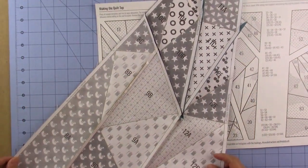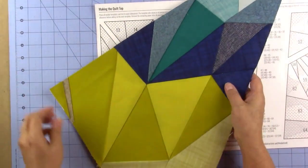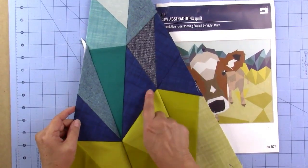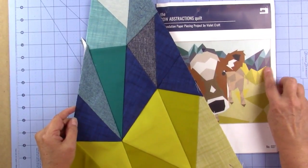Here's what it looks like from the back, all seamed with papers still on. Here's what it looks like from the front. These little blue parts here are these blue parts right here.